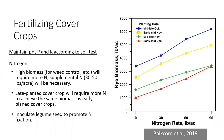Moving on to cover crop management, I want to briefly cover fertilization. For pH, phosphorus, and potassium, we want to maintain soil test recommendations. You can take a soil sample and send it to the Auburn University soil testing lab. As long as we're maintaining pH, phosphorus, and potassium for our cash crops, they should be in adequate supply for our cover crops. However, nitrogen requires some different considerations. Nitrogen management is going to depend on the type of species as well as the amount of biomass you're trying to achieve.